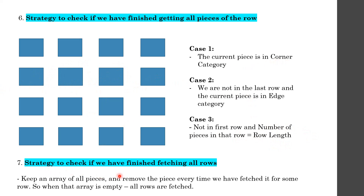To check whether all rows have been fetched, we maintain an array of all pieces and remove each piece from the array once it is assigned to a row. When the array becomes empty, we know that all rows have been fetched.